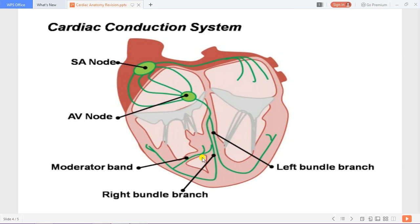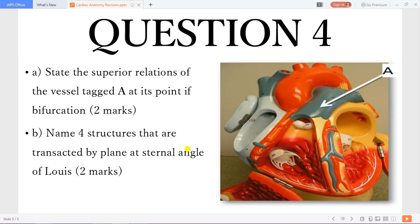One of the branches from the right bundle branch is what you call the moderator band. This shows you the superior relations of the pulmonary trunk which is the arch of the aorta and the ligamentum arteriosum.